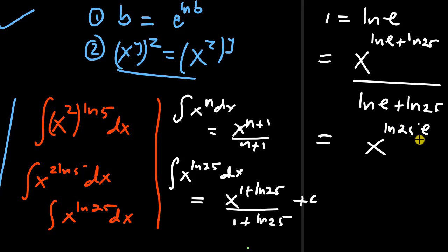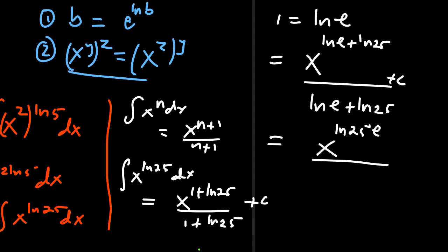And of course, I can combine the two logarithms together. So I'll have x to the power of the natural log of 25 times e divided by natural log of 25e, plus a constant. This is our final solution.